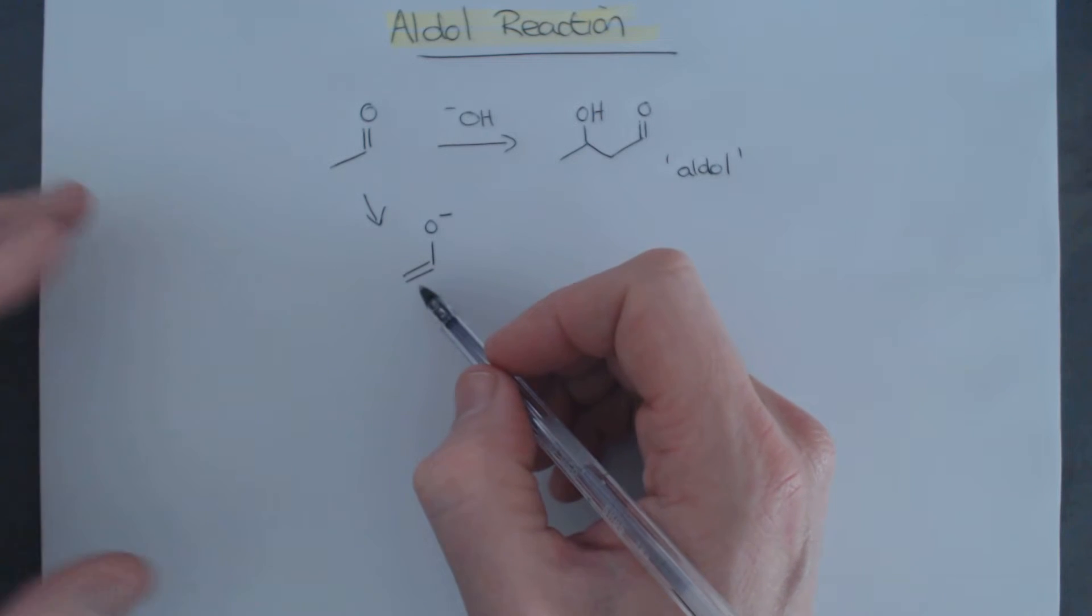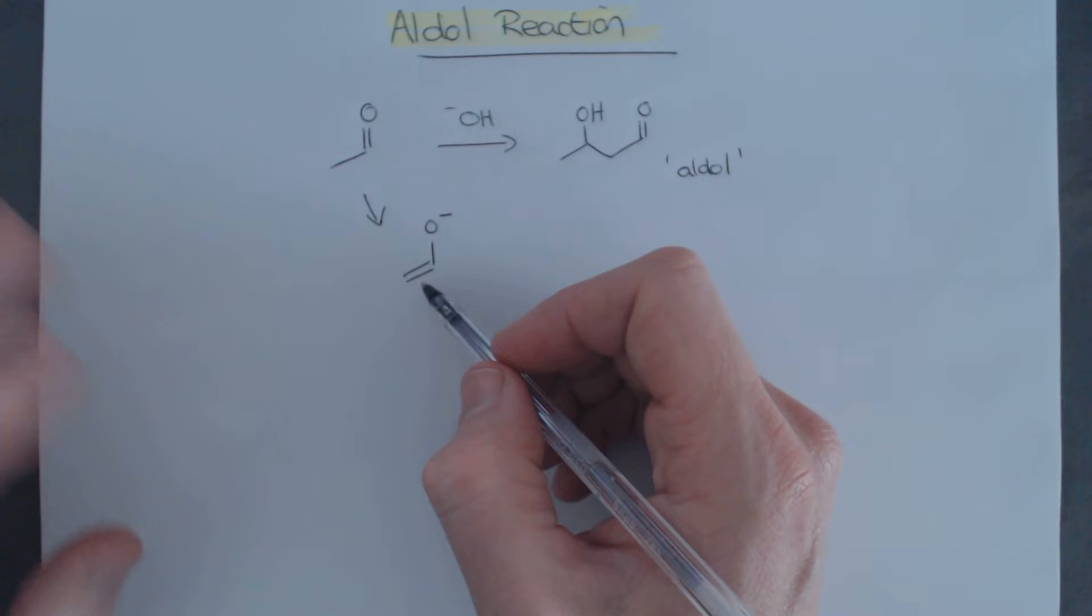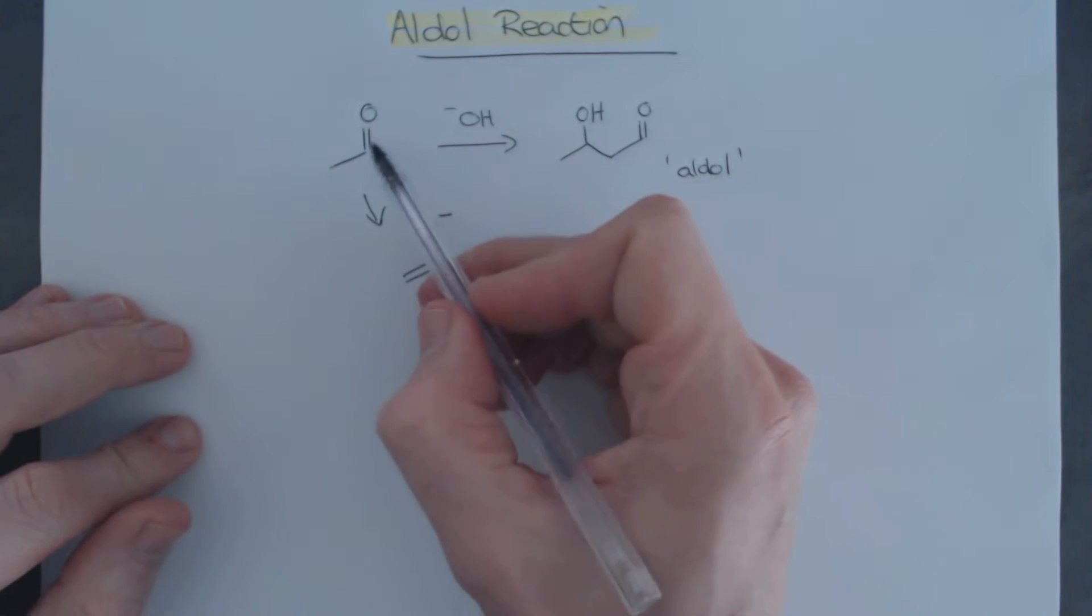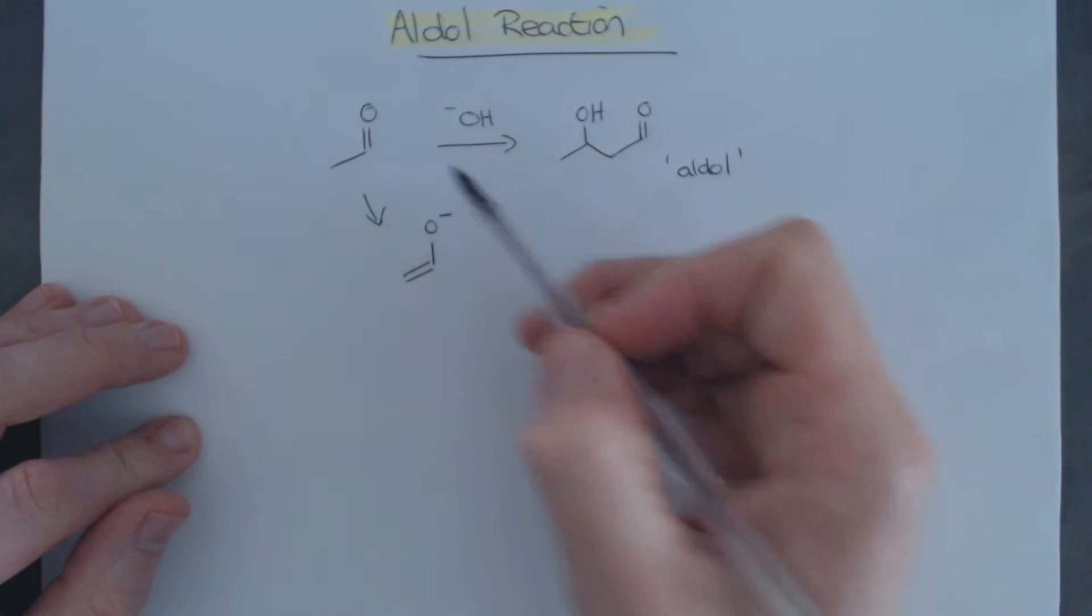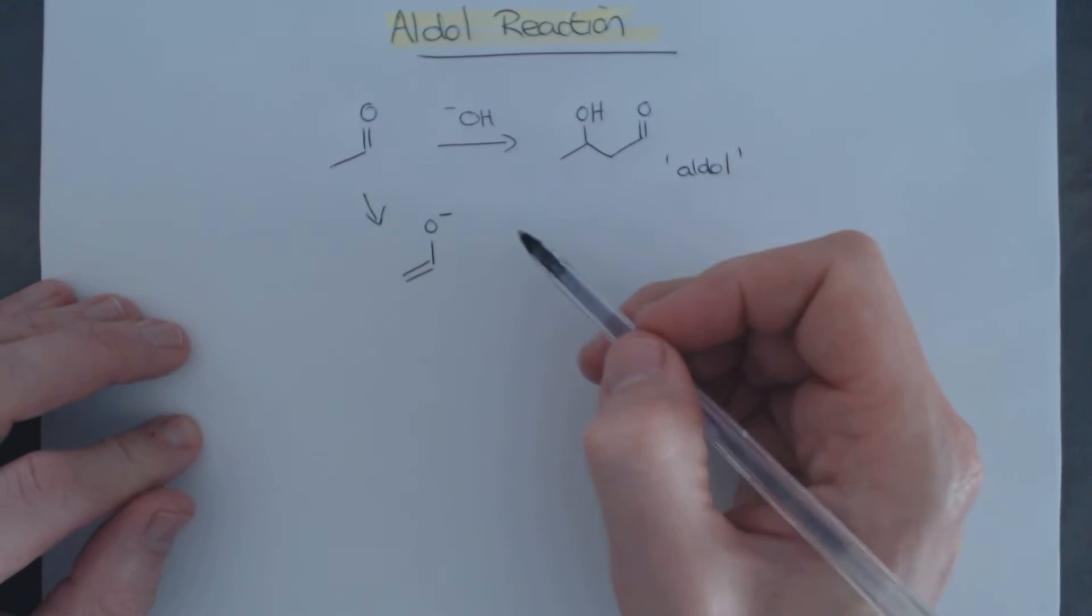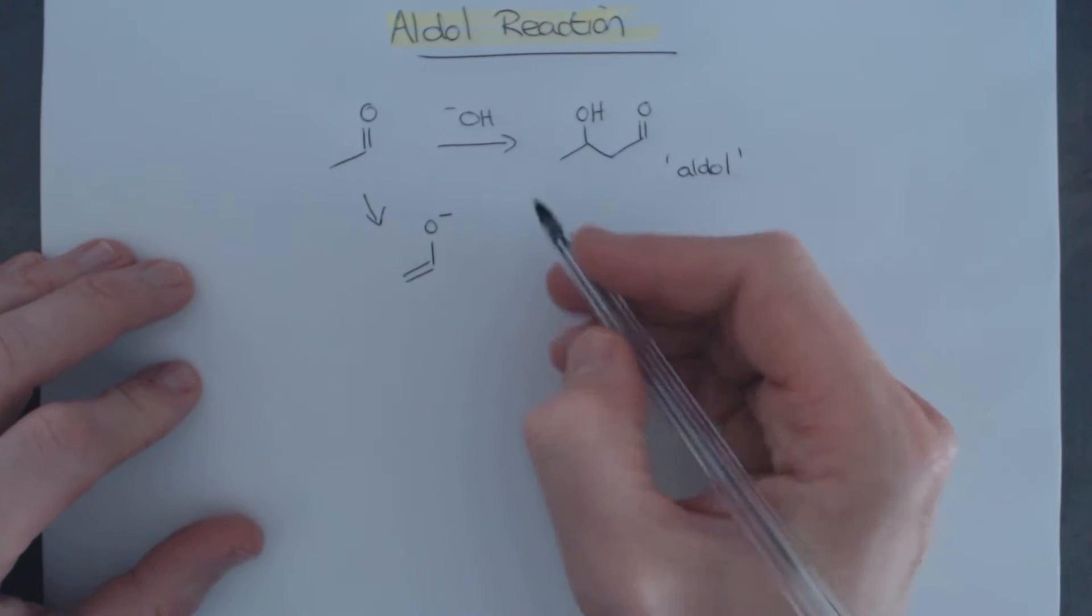So you've been reacting it with different alkyl halides or maybe a conjugated system where we do a 1,4 addition. But here in this part of the course, we're going to start using carbonyls, in this case an aldehyde, as the electrophile.